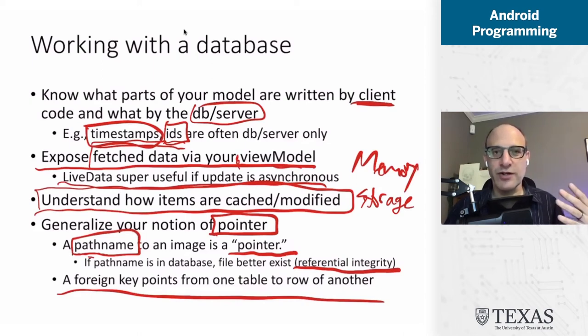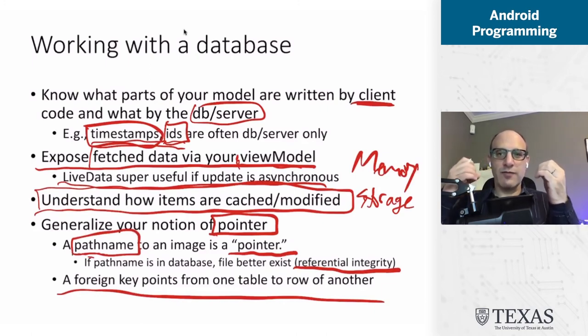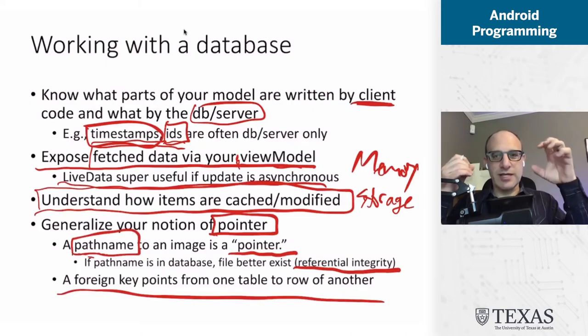We need to make sure that when we're writing our data, our pointers are always valid. If you have a pointer to a piece of data — say the pointer is the path to an image file — you never write the path before you write the object. You always write the object first and then write the pointers to the object. If you follow that rule, your application will have referential integrity, your users will be happy, and referential integrity is what's for dinner.